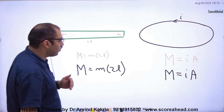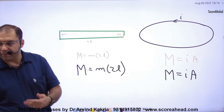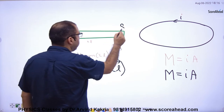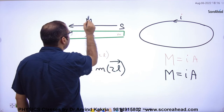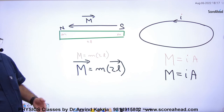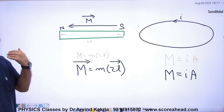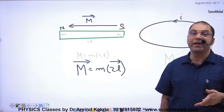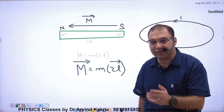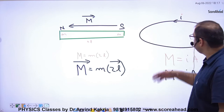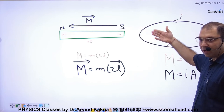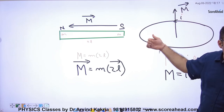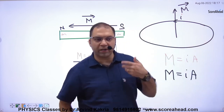Now, capital M is a vector, so we need to find its direction. For a bar magnet, capital M goes from south to north. For a current-carrying loop, the poles are not visible, so we use the right-hand rule: curl the four fingers of the right hand along the direction of the current in the loop, and the thumb points in the direction of capital M. This is the same rule used to find B in a circular loop.